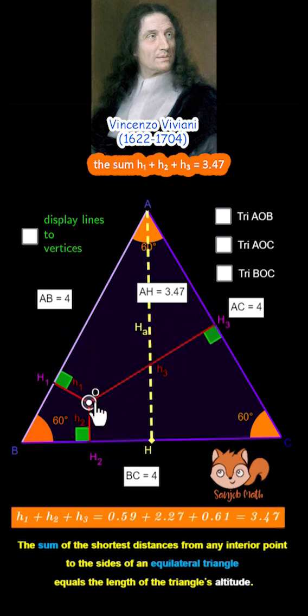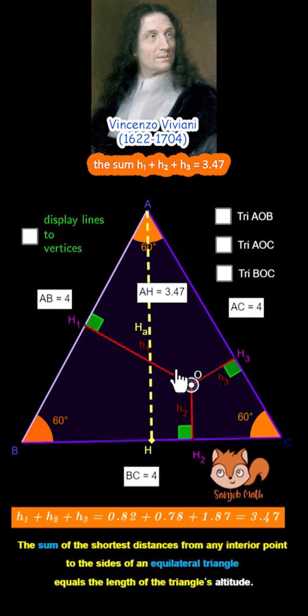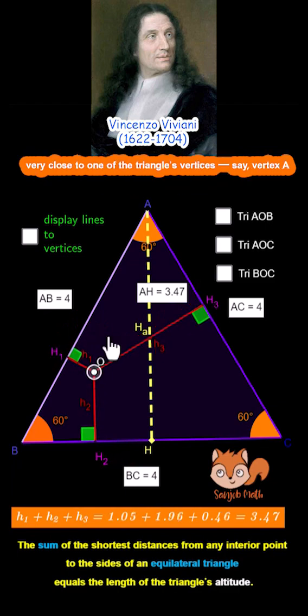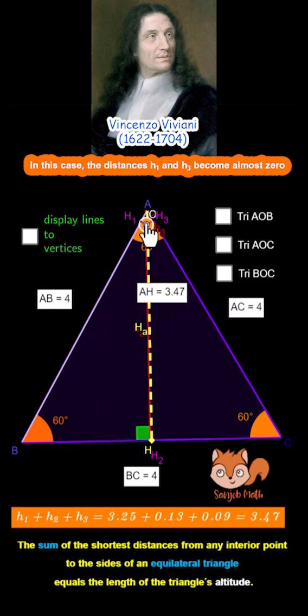To understand why this works, observe what happens when point O is placed very close to one of the triangle's vertices, say, vertex A in this case.